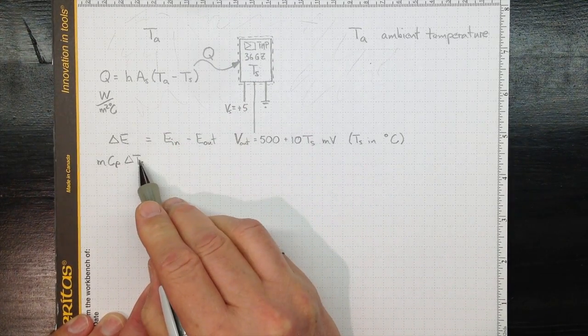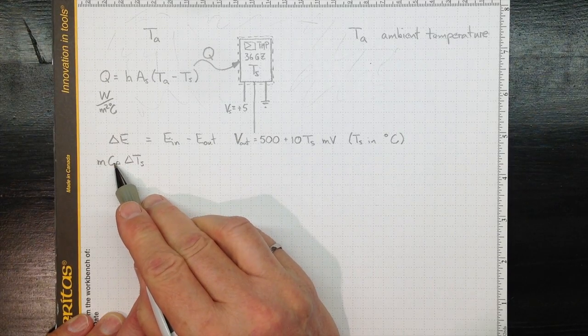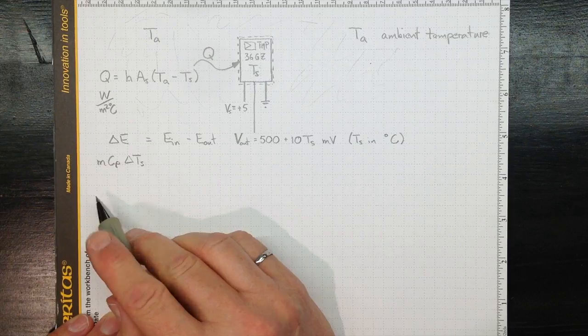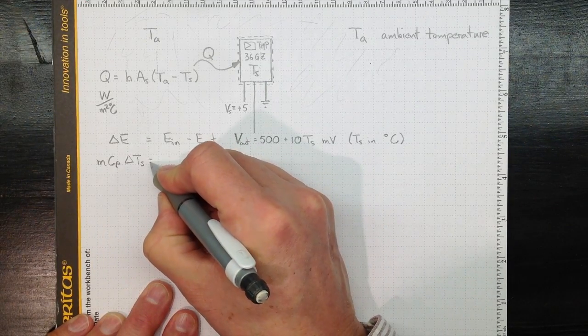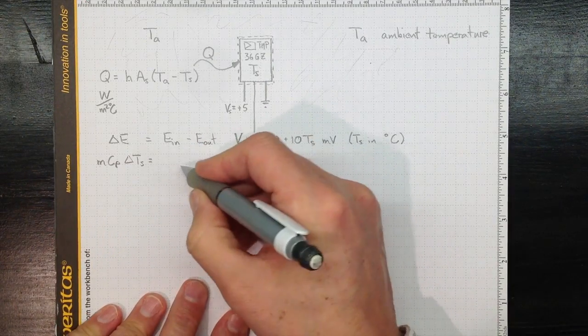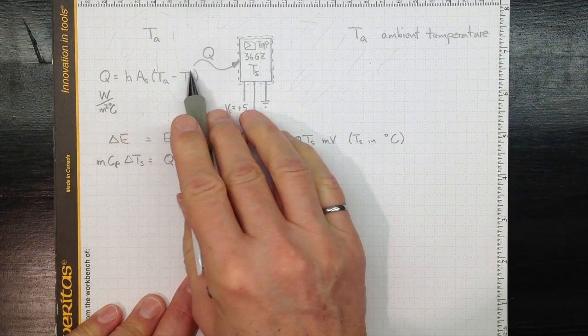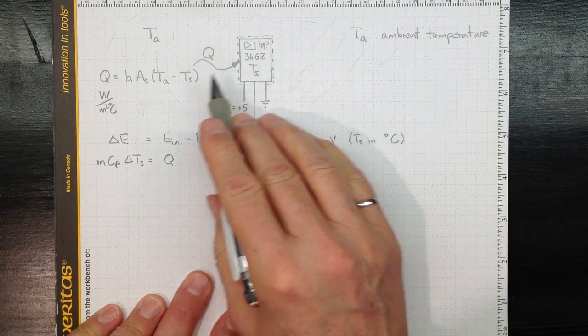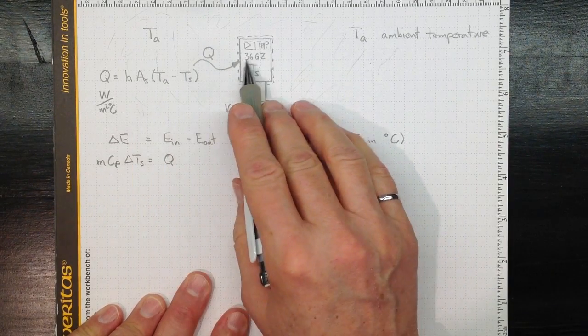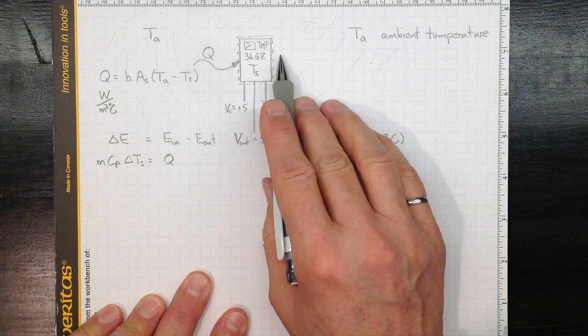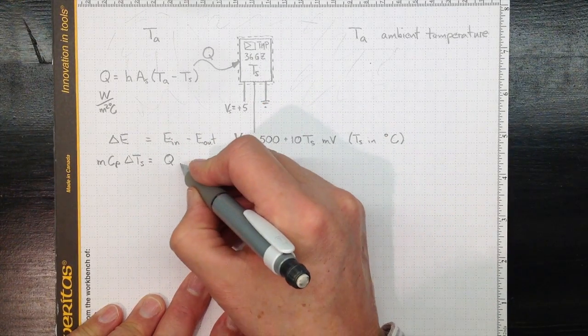So if it goes up by one degree, the heavier it is, or the more heat capacity it's got, the more of a change in energy that represents. The energy in, well that will be Q, the energy in in watts or joules per second, times delta T, how long a time we're watching the control mass for. So it will be Q times delta T.